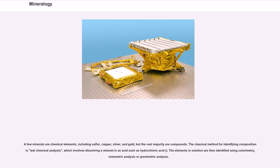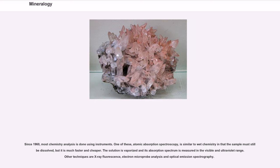A few minerals are chemical elements, including sulfur, copper, silver, and gold, but the vast majority are compounds. The classical method for identifying composition is wet chemical analysis, which involves dissolving a mineral in an acid such as hydrochloric acid. The elements in solution are then identified using colorimetry, volumetric analysis, or gravimetric analysis. Since 1960, most chemistry analysis is done using instruments. One of these, atomic absorption spectroscopy, is similar to wet chemistry in that the sample must still be dissolved, but it is much faster and cheaper. The solution is vaporized and its absorption spectrum is measured in the visible and ultraviolet range. Other techniques are X-ray fluorescence, electron microprobe analysis, and optical emission spectrography.